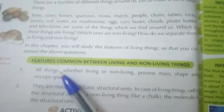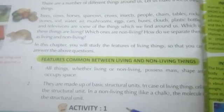The second feature is that they are made up of a basic structural unit. Both living things and non-living things are made up of a basic structural unit — meaning they are built from smaller units. In the case of living things, the smallest structural unit is the cell. In the case of non-living things, like chalk, the basic structural unit is the molecule.